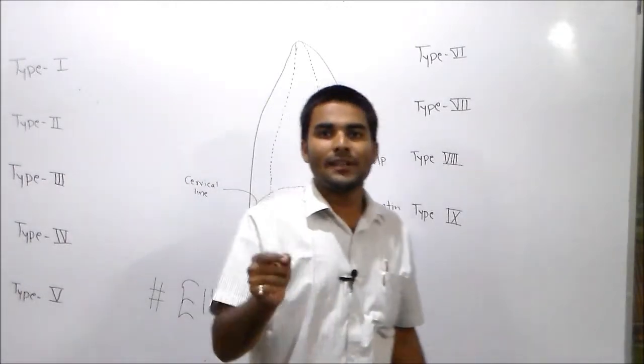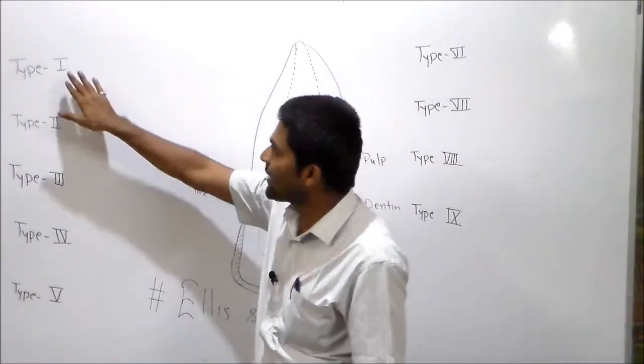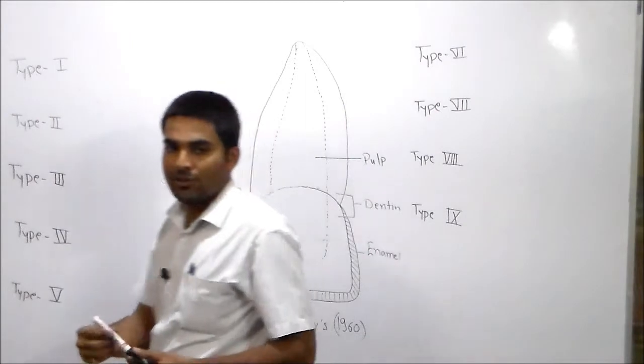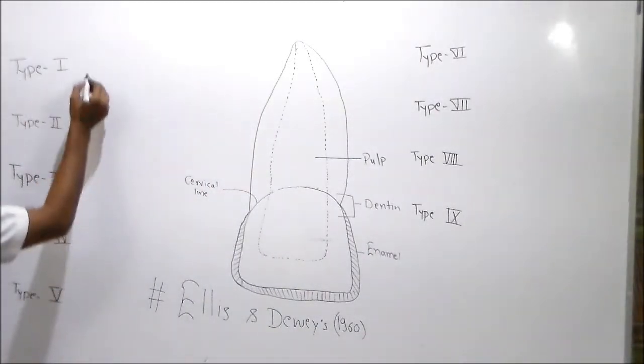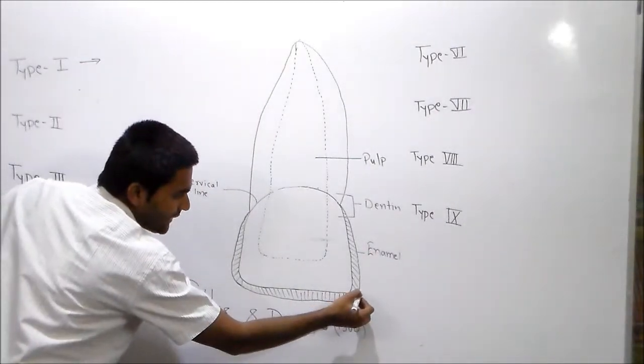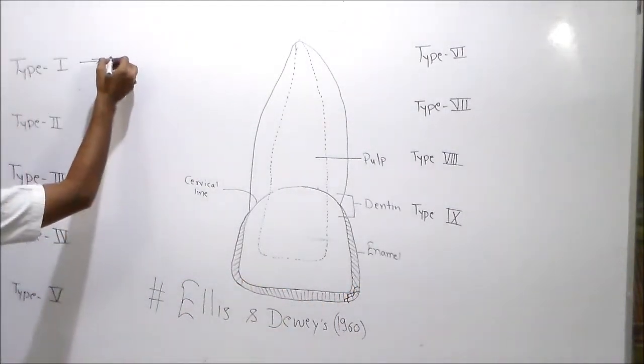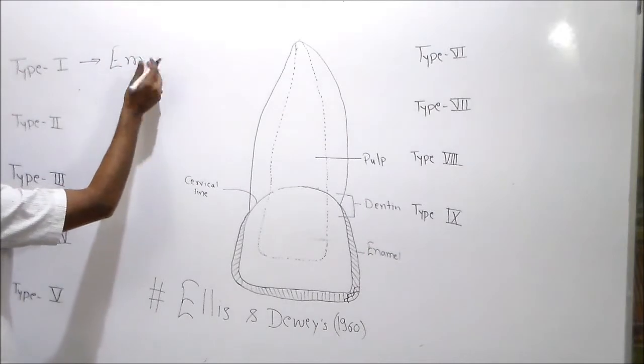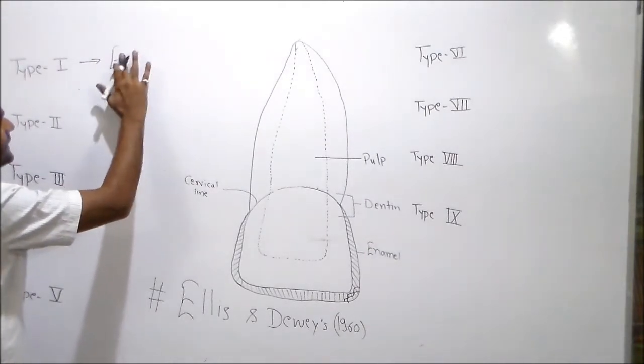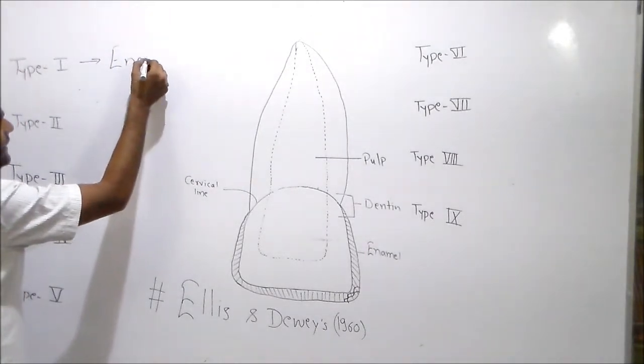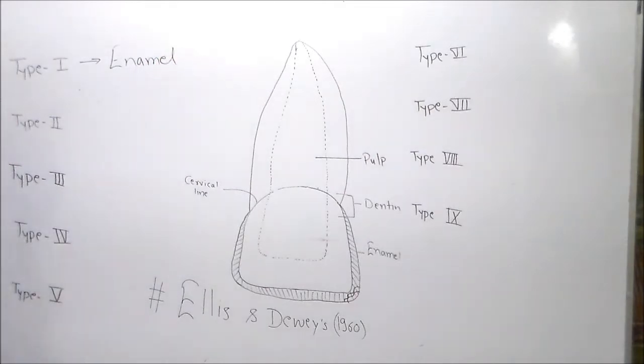My dear friends, what happens in Ellis class 1 fracture? Class 1 fracture, that is fracture involving enamel, considerable amount of enamel. In short, you can say that fracture in enamel layer.